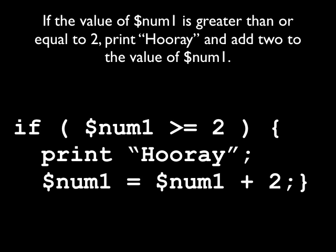So how would we set this up? If we wanted to say if the value of num1 is greater than or equal to 2, print hooray and add 2 to the value of num1. So we set up the condition if num1 is greater than or equal to 2 and then we begin with the curly brace and we say print hooray semicolon and then num1 equals num1 plus 2, close curly brace.